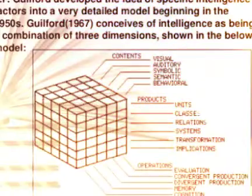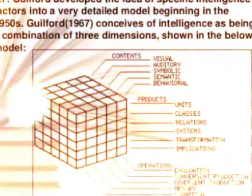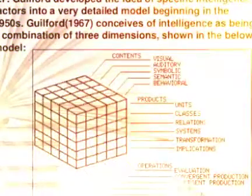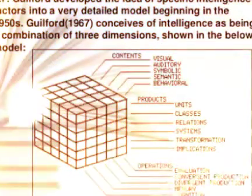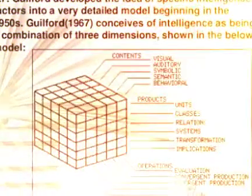He worked on it in the 5th decade of the 20th century and developed a 3-dimensional model of intelligence in 1955. Later on he completed his work on 3-dimensional model of intelligence in 1966.